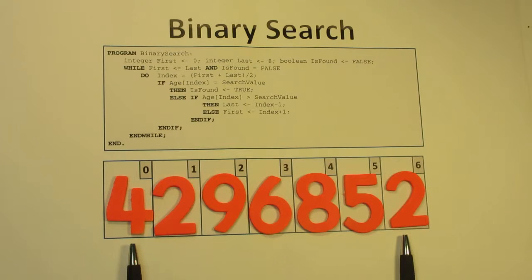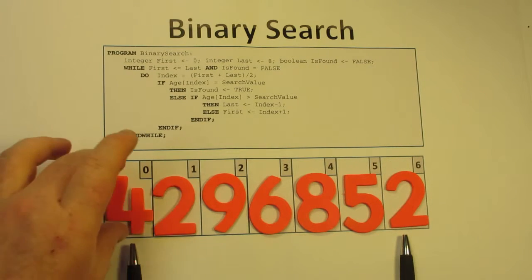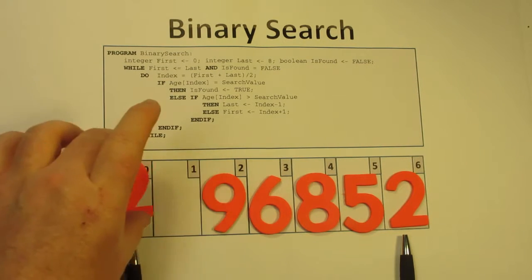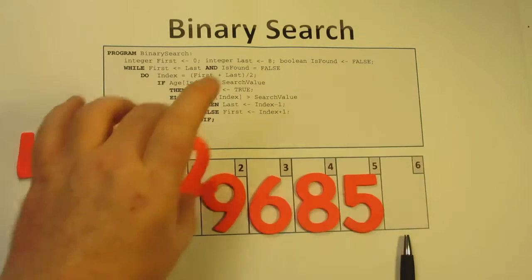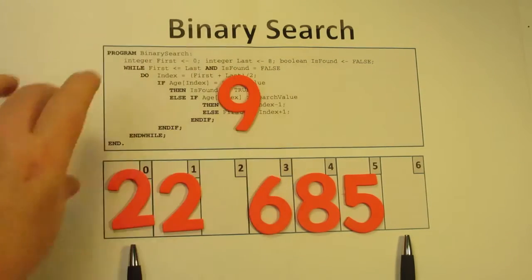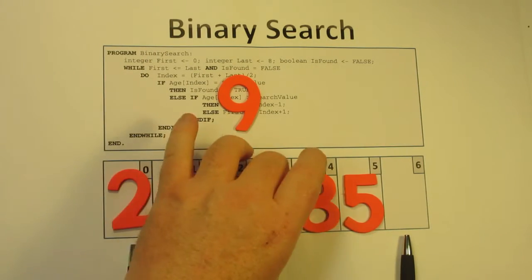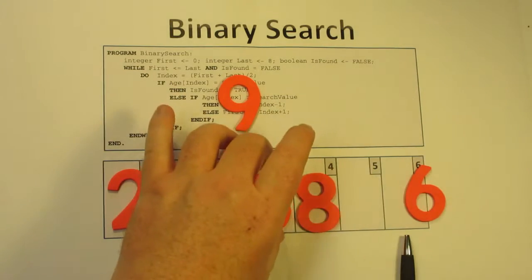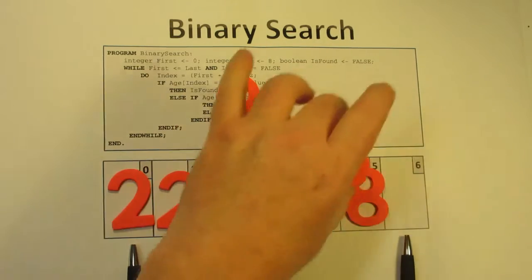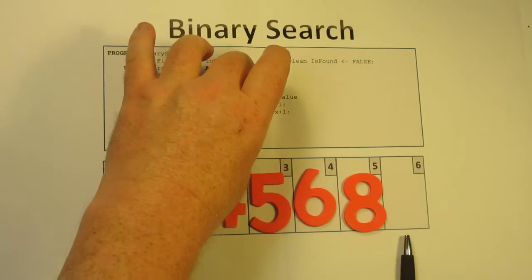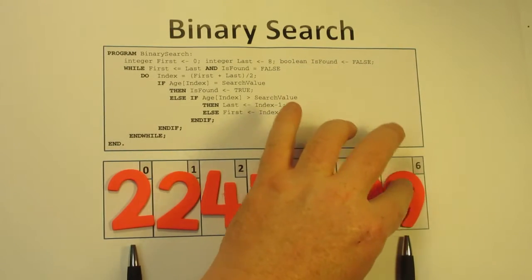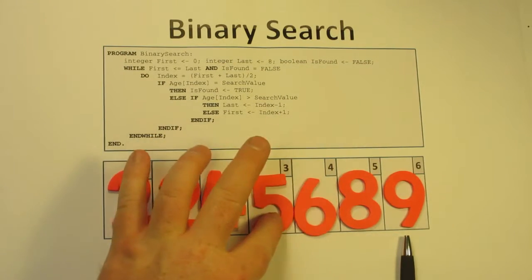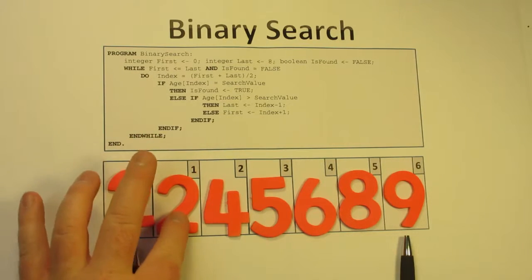The data has to be sorted first. In this case what we have to do is put the two twos at the start, then the four next, move the five across here, put the six here and the eight here. How we might sort the data we'll think about in a different video, but for the moment let's assume we have an array that's completely sorted.